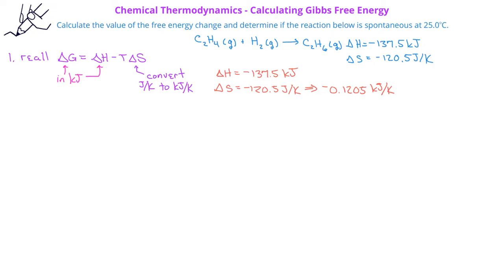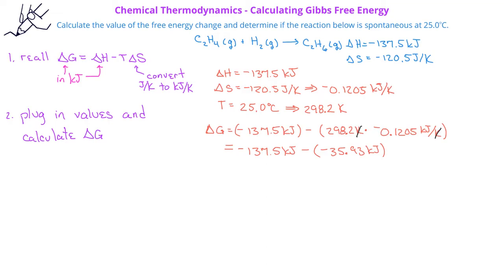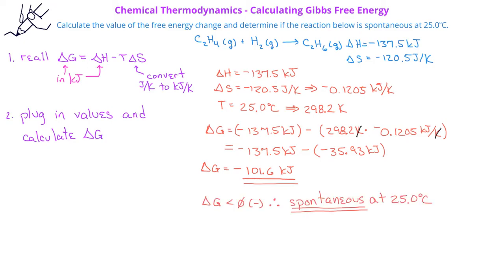The temperature is 25.0 degrees Celsius, or 298.2 Kelvin. Plugging in the values: ΔG = −137.5 kJ − (298.2 K × −0.1205 kJ/K), which gives −137.5 kJ minus −35.93 kJ, so the free energy change is negative 101.6 kilojoules. Since ΔG is negative, this reaction is spontaneous at 25.0 degrees Celsius.